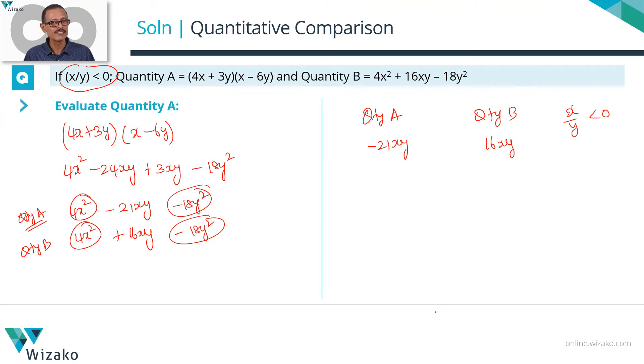When will x upon y be negative? When one of these numbers is positive and the other number is negative. It could be x positive, y negative, x negative, y positive.